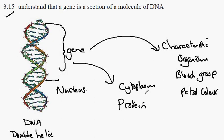It is this protein that controls the production of the characteristic. So the information flows from the gene to the protein.